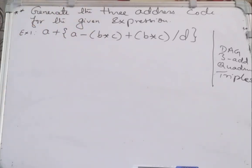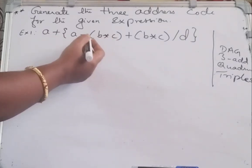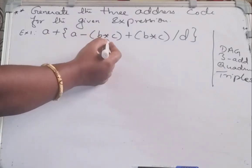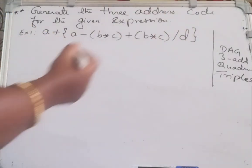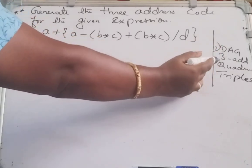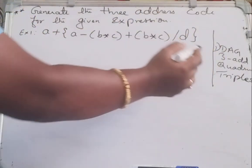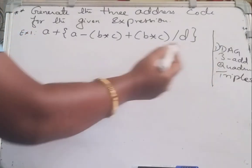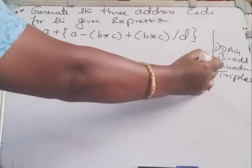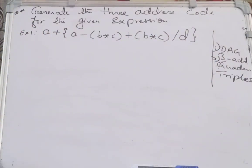This is an important question. For the given expression we have to follow a sequence of rules: any expression should be converted to a syntax tree or a DAG form. From the DAG you have to construct the three address code. For the three address code instructions only you can generate the quadruples or the triples. This is the hierarchy we follow.